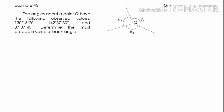Let us try another example — Example Number 2. The angles about a point Q have the following observed values: 130 degrees 15 minutes 20 seconds (θ1), 142 degrees 37 minutes 30 seconds (θ2), and 87 degrees 7 minutes 40 seconds (θ3). Determine the most probable value of each angle.